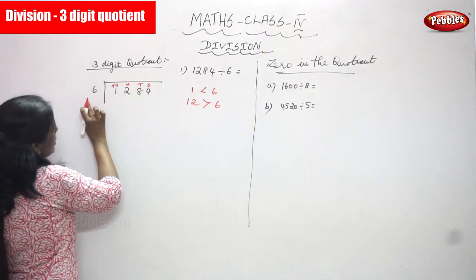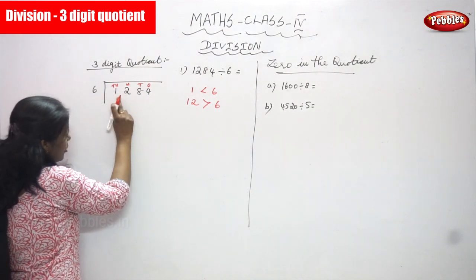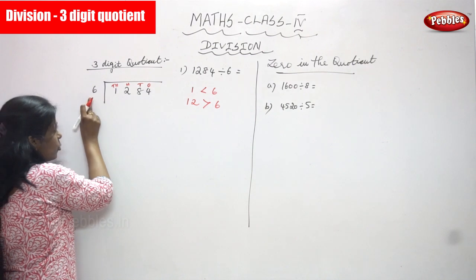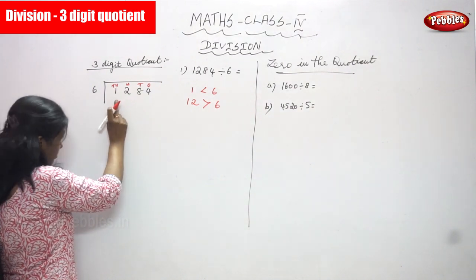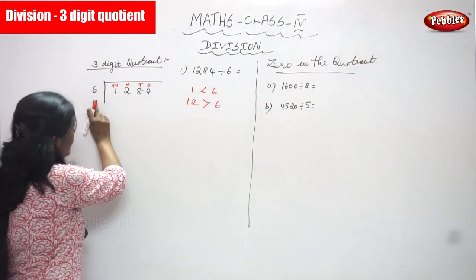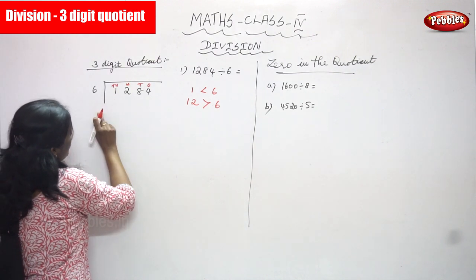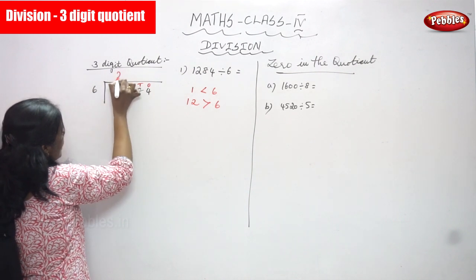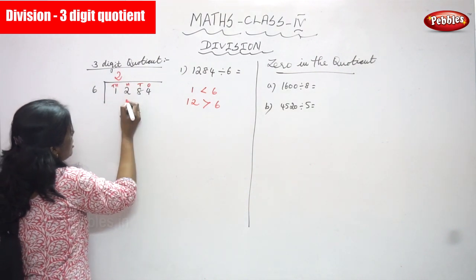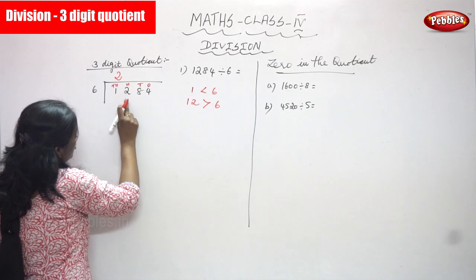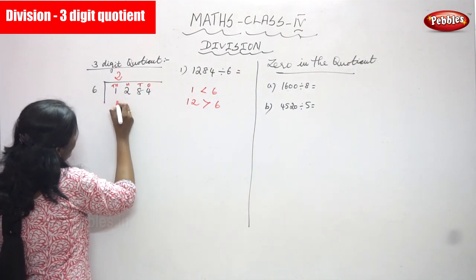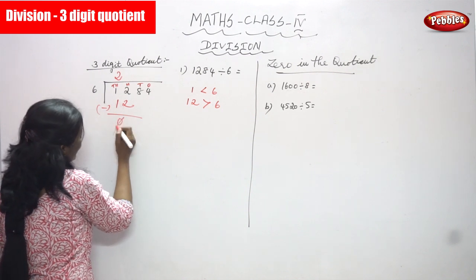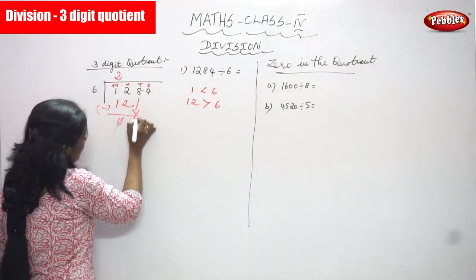12 is the dividend and 6 is the divisor. Using the 6 times table: 6 twos are 12, so 6 goes into 12 two times. Write 2 in the thousands place of the quotient. 12 minus 12 equals zero — cancel the zero. Next, bring down the 8.